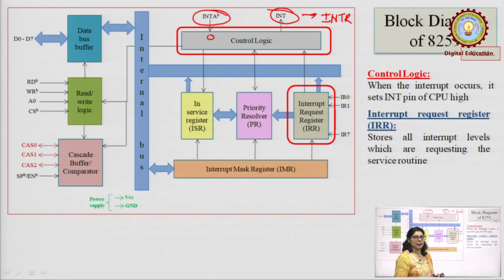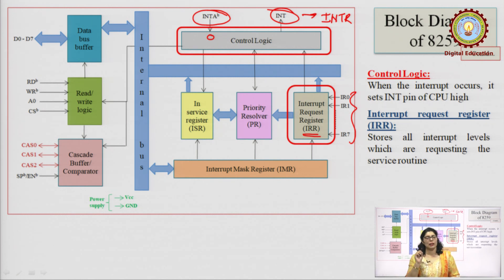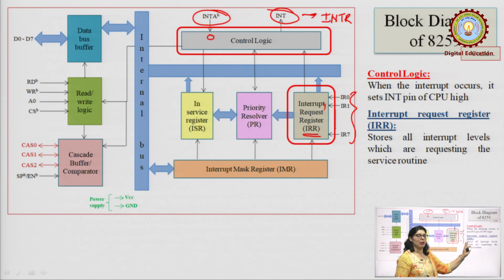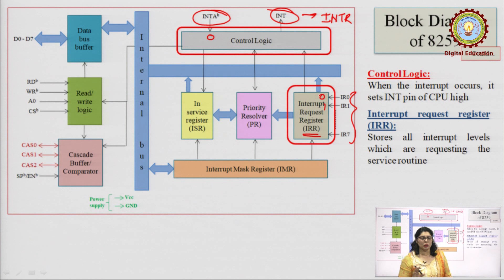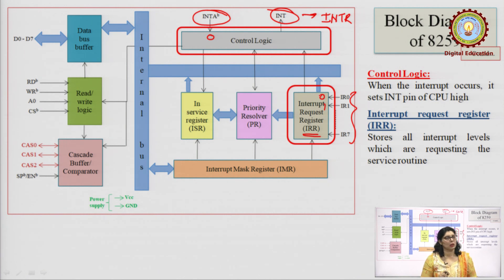Next is the Interrupt Request Register, or IRR. As seen in the block diagram, there are 8 pins connected to it: IR0 through IR7, where IR stands for interrupt request — so we have 8 pins for 8 devices. Whenever an interrupt is generated on any pin, that pin goes to logic 1; pins that have not generated an interrupt remain at logic 0. So the purpose of IRR is to store the interrupt level — which pin generated an interrupt and which did not, and which devices are functioning normally.